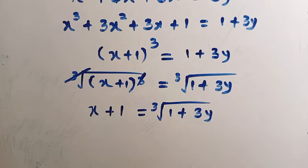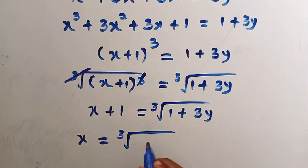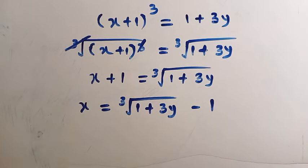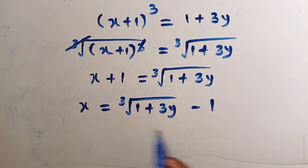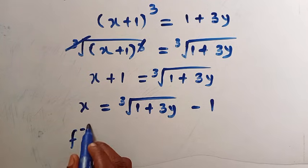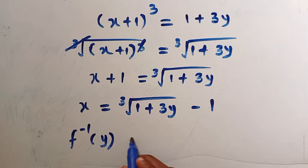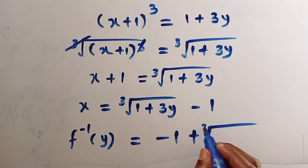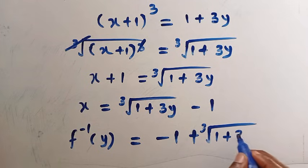Let's subtract 1 from both sides. So we have x equals the cube root of 1 plus 3y minus 1. By replacing this, we have f inverse of y equals minus 1 plus the cube root of 1 plus 3y.